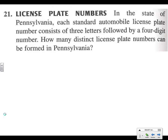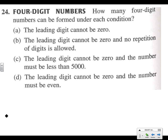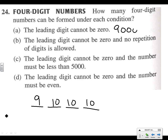Moving on to problem 24: how many four-digit numbers can be formed under each condition? For part (a), the leading digit cannot be zero, so there are 4 spots. If the leading digit can't be zero, there are 9 options for the first spot and then 10 for each of the following. So that's 9 × 10 × 10 × 10 = 9,000.